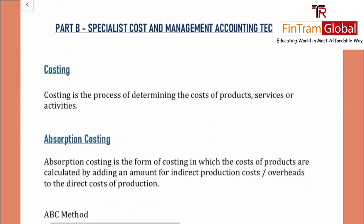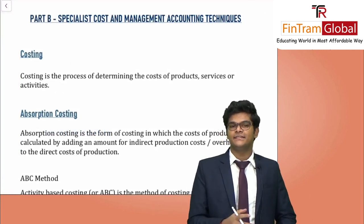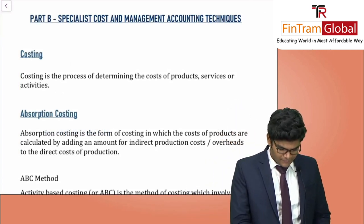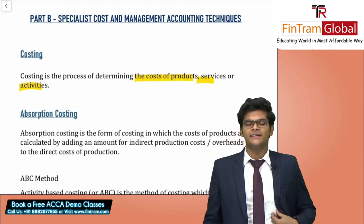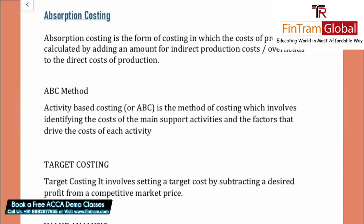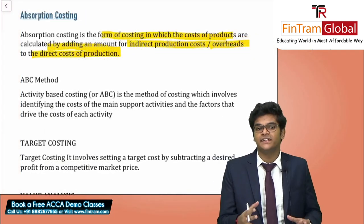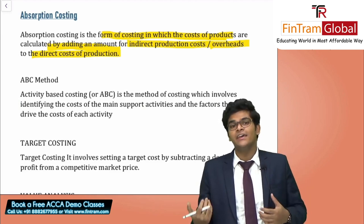Moving to Syllabus Part B: Specialist Cost and Management Accounting Techniques. Costing is the process of determining the cost of products, services, or activities. The first method is absorption costing — the traditional method — where the cost of products is calculated by adding an amount of indirect production overheads to direct costs of production.